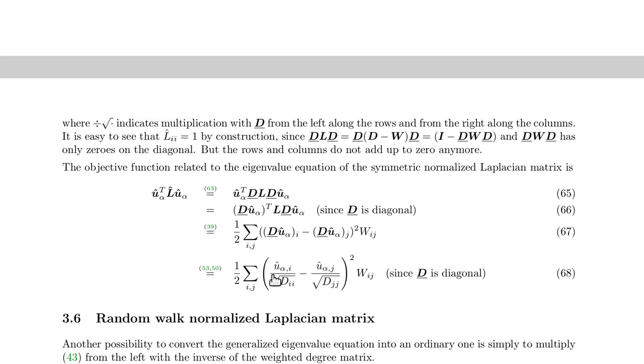This objective function is similar to the original one, except that the values of the nodes are divided by the square root of the degree matrix, whatever that means.